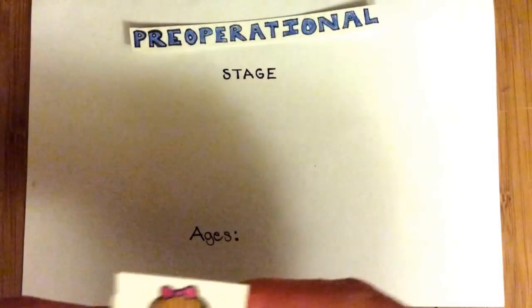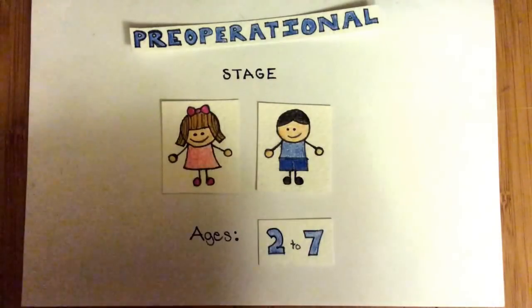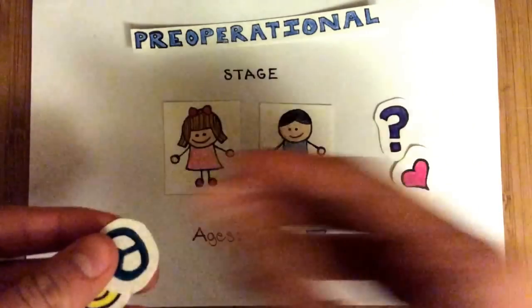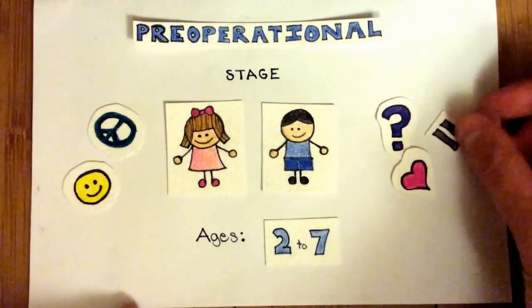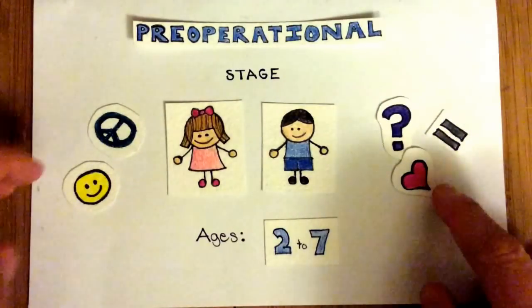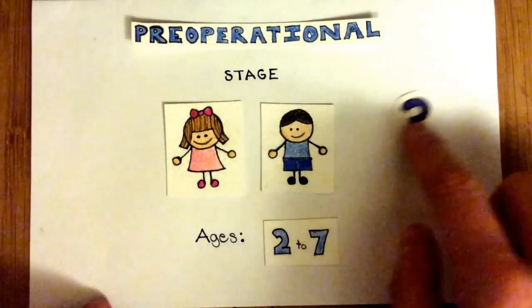The preoperational stage includes children from ages 2 to 7. A key feature of this stage is the capacity to use symbolic representation, in which one object is understood to represent another object or idea. While this stage is very important for growth, children still display some major limitations in their cognition.